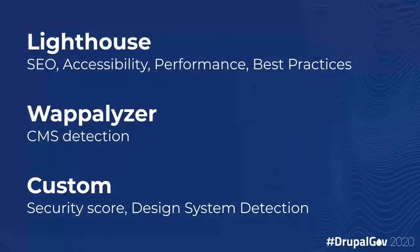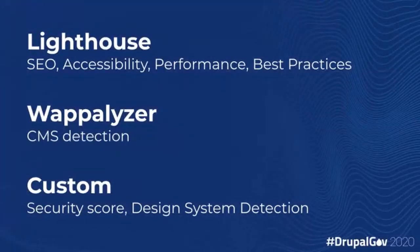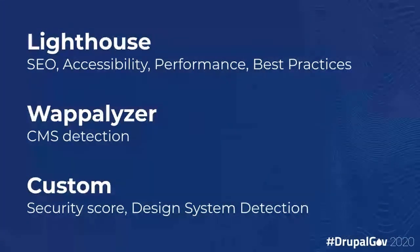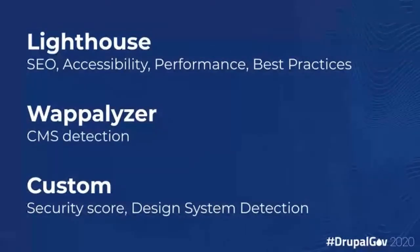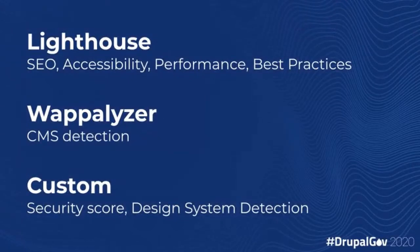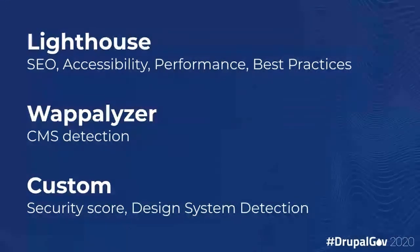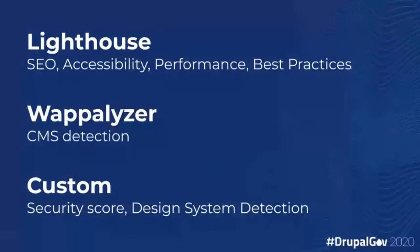We're using different tools to do the analysis. It is automated, and we're using Lighthouse to measure SEO, accessibility, performance, and best practices. We're also using Wappalyzer to measure the content management system. We've also written some custom code that will determine a security score based out of 100, determined by the various security headers that can be added to the response. We've also got some custom design system detection in our code as well.